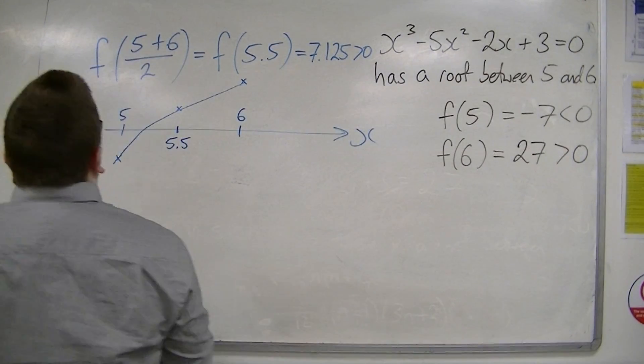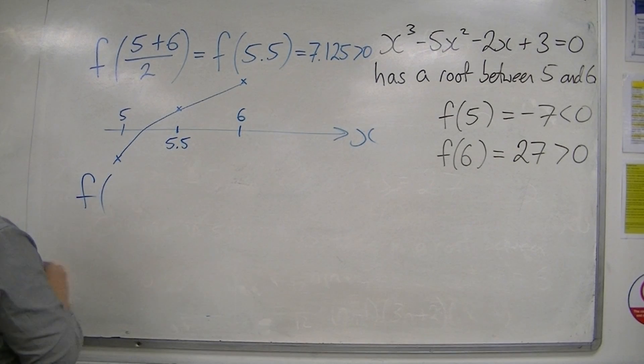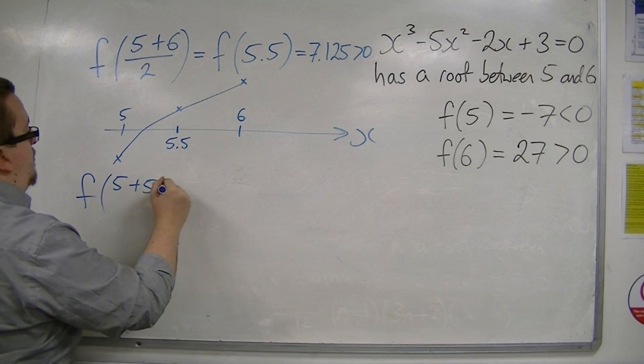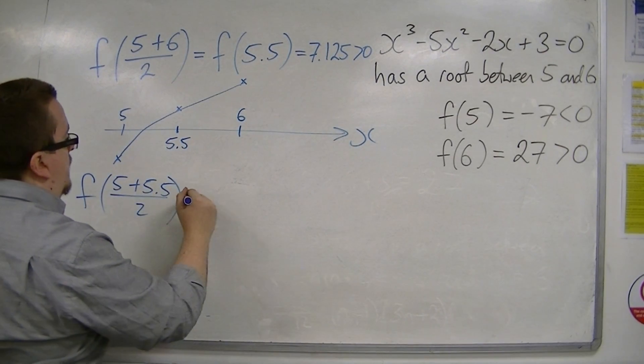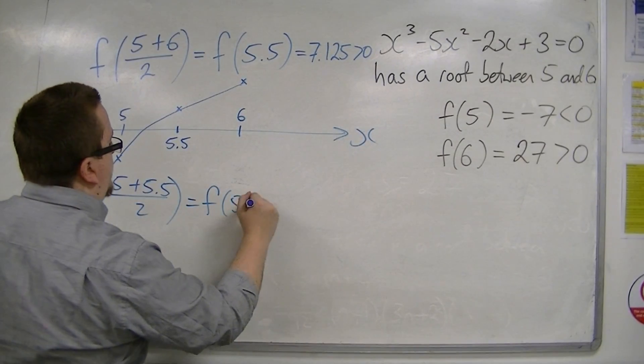So now, what I would do is look at f of 5 plus 5.5 over 2, which is f of 5.25.